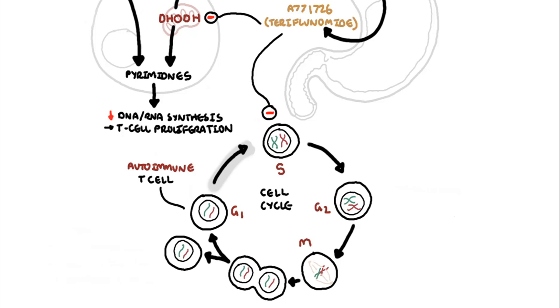It is through this action that leflunomide inhibits autoimmune T-cell proliferation and subsequently production of autoantibodies by B-cells.